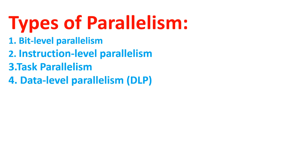There are four types of parallelism: bit level parallelism, instruction level parallelism, task level parallelism, and data level parallelism. We have already discussed bit level parallelism. So now our current session topic is instruction level parallelism.